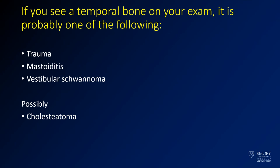If you see a temporal bone fracture on your exam, it's probably one of these things. It could show trauma, or infectious mastoiditis. Vestibular schwannomas — those masses of the internal auditory canal — would be quite common. A cholesteatoma would be possible but less likely. The ABR core exam is going to be pretty light on temporal bone, and you might see a bit more on the certifying exam if you're choosing neuro, but I don't think you'll see a lot of advanced temporal bone pathology.